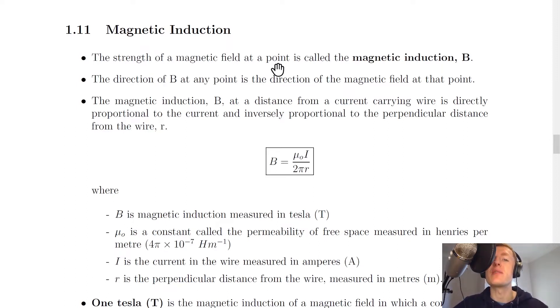The strength of a magnetic field at a point is called the magnetic induction and we give it the symbol capital B. The direction of B at any point is the direction of the magnetic field at that point.